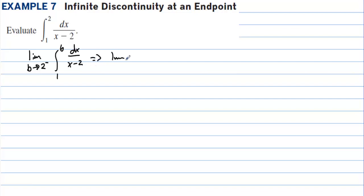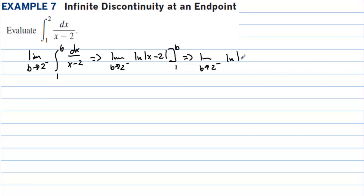That becomes the limit as b approaches 2 from the left of the natural log of the absolute value of (x minus 2), evaluated from 1 to b. That gives the limit as b approaches 2 from the left of the natural log of the absolute value of (b minus 2), minus the natural log of the absolute value of (1 minus 2), which is the natural log of 1, which equals 0.